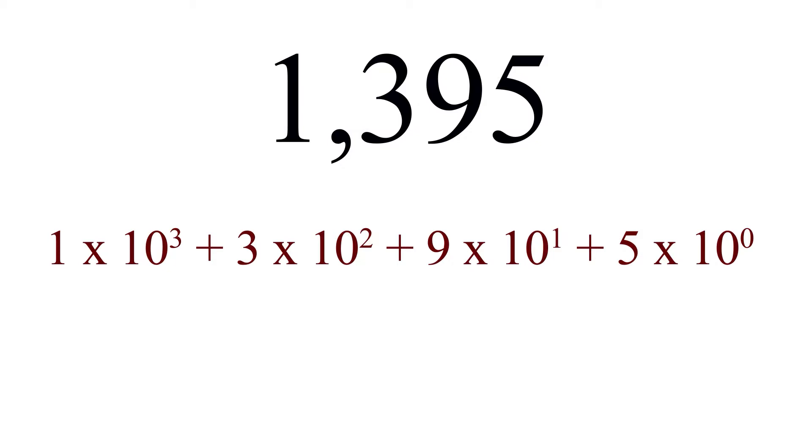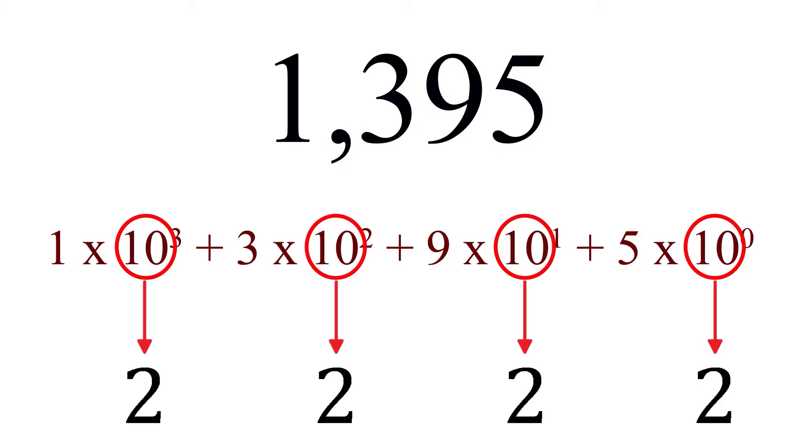Now when we talked about decimal numbers, we reviewed the concept of expanded form. We can express binary numbers in expanded form as well. Since it is a base 2 number system, the base of the exponent is 2.